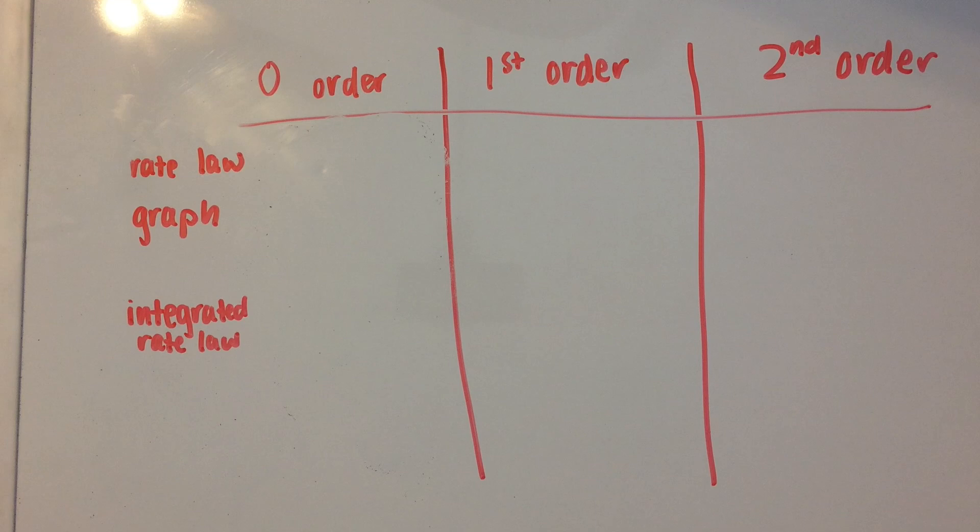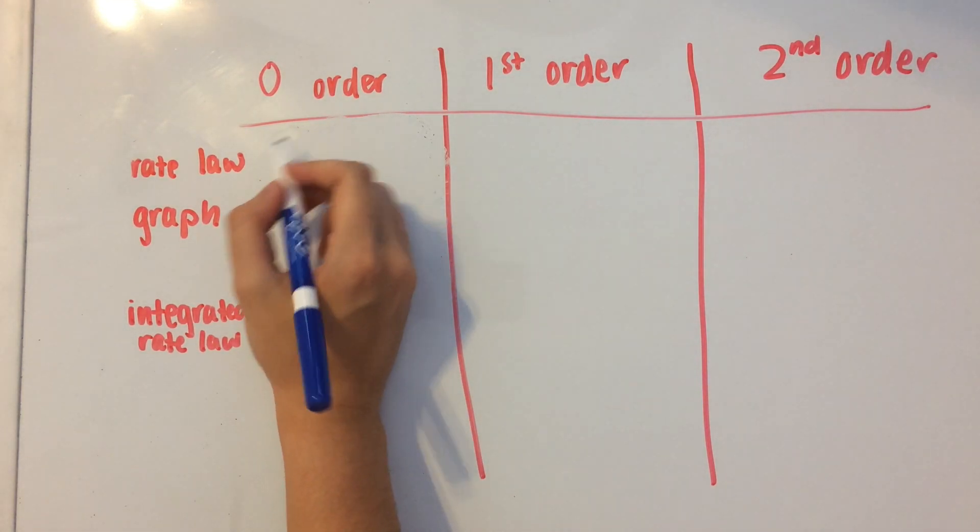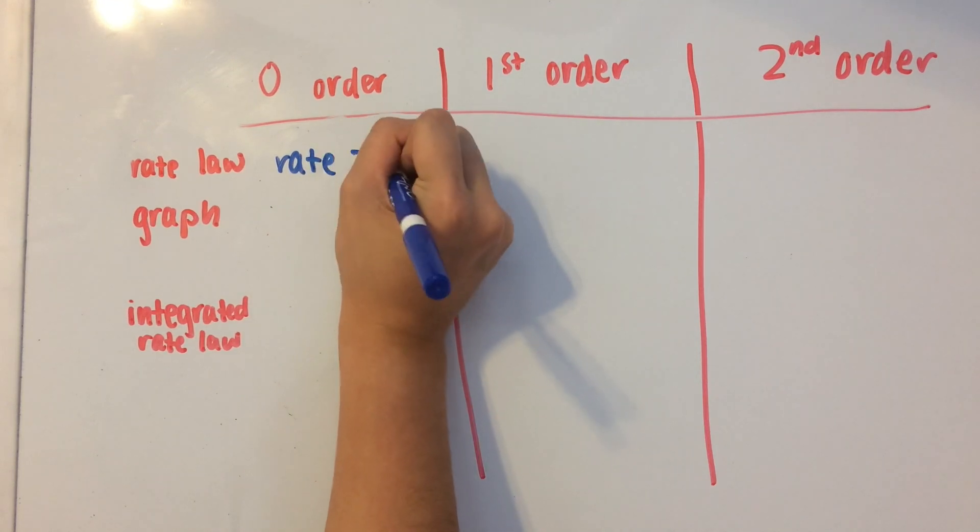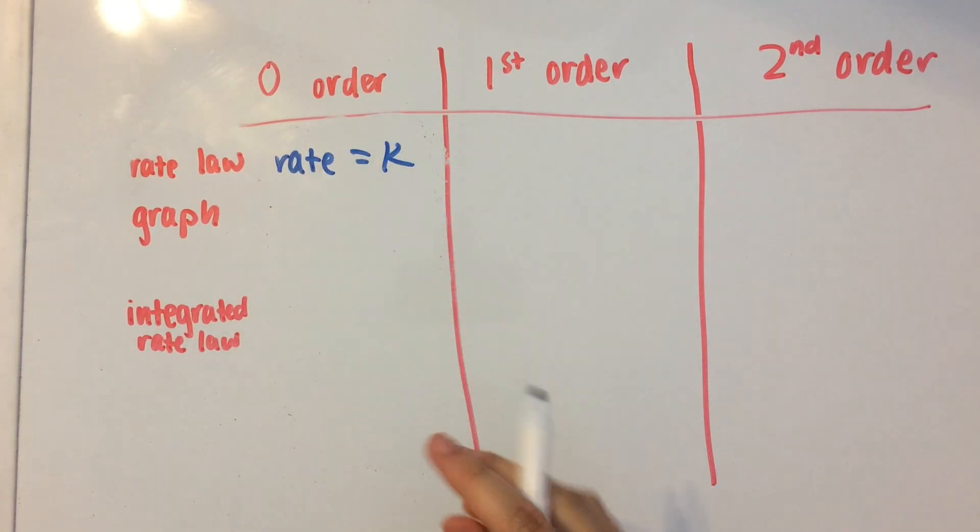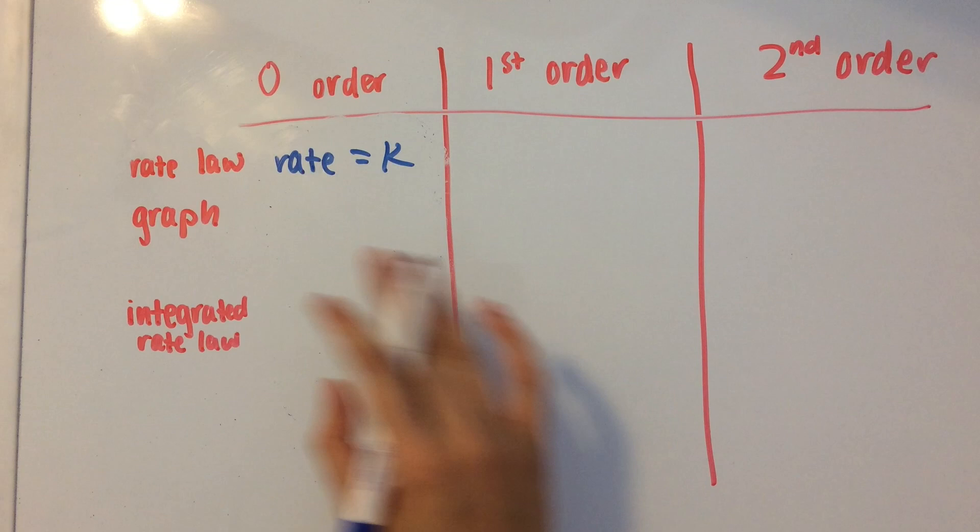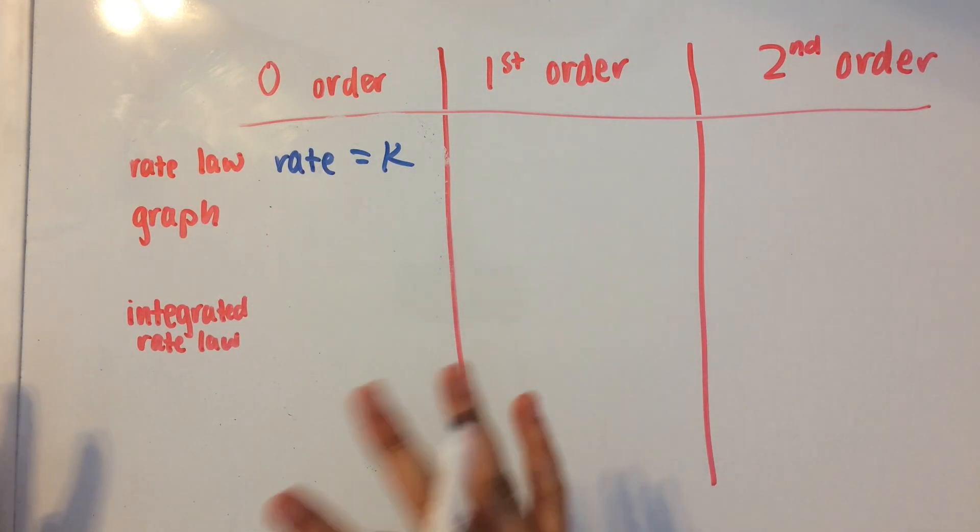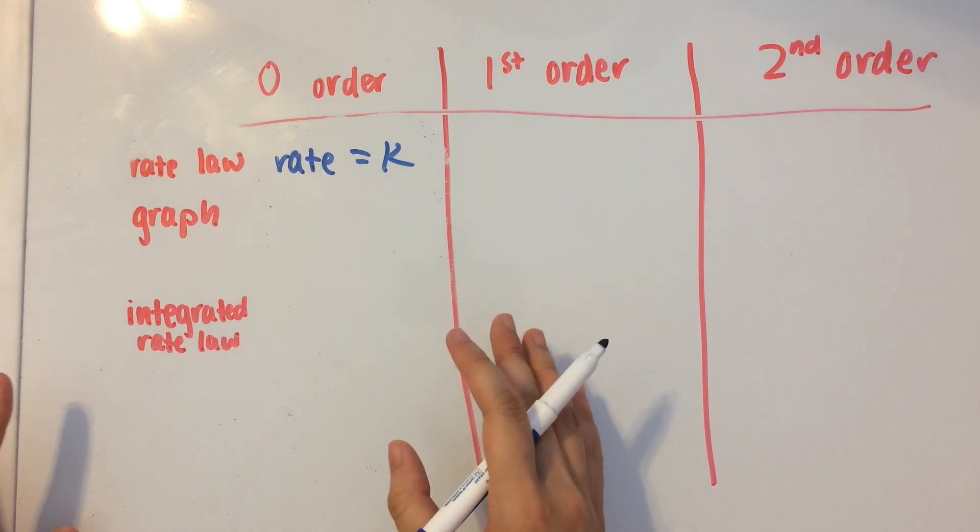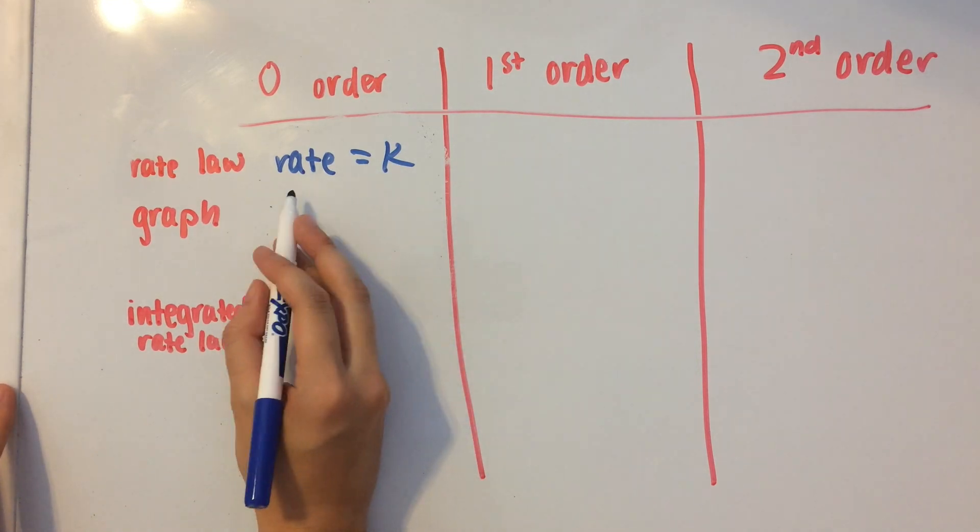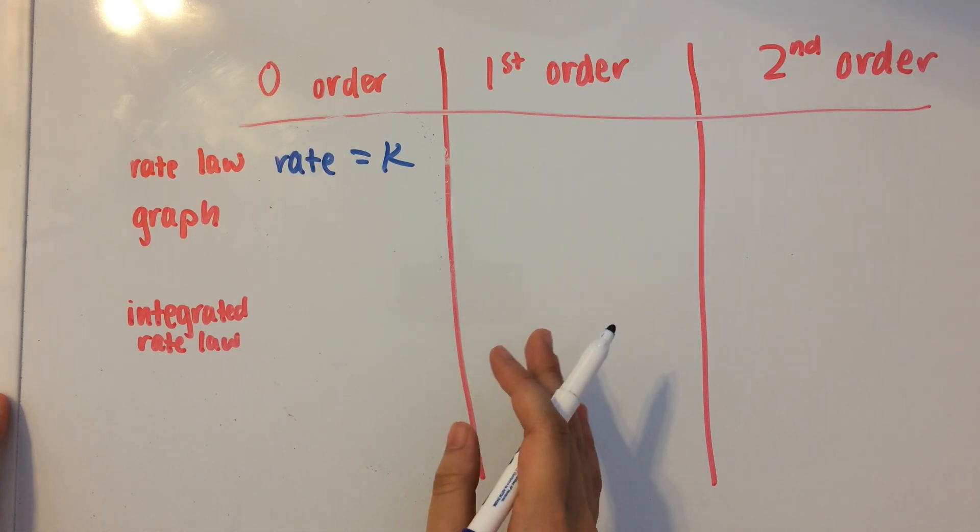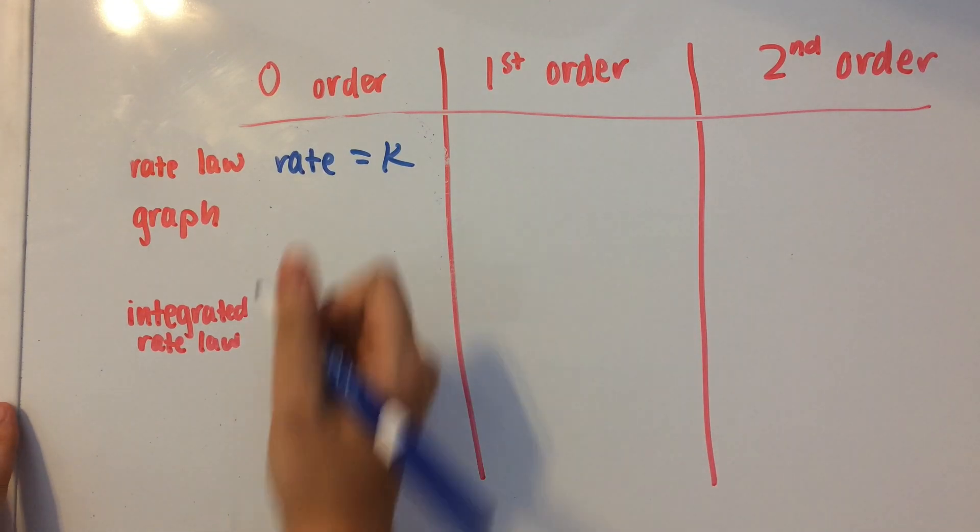So let's start off with the zero-order rate law, which is just going to be rate equals k. And k is the rate constant. So what this is basically saying is that it doesn't matter what the concentrations of the reactants are. It's just that the rate of the consumption of the reactants is going to be the same until all of the reactants are consumed.